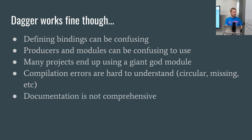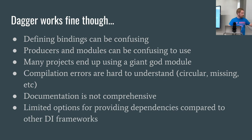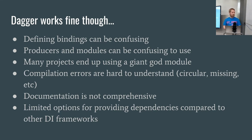The documentation is very sparse — it doesn't go over many scenarios. Even their helper app showing you how to build a coffee maker in Java is not very realistic for what you would actually use it for. And Dagger doesn't give you many options — basically providers, factories, and singletons. It provides scoping to a limited extent, but they're not very flexible compared to what other DI frameworks offer.